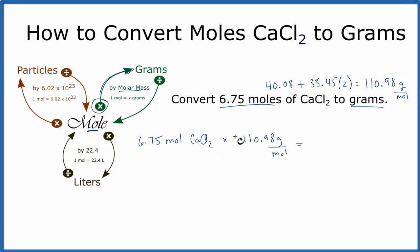When we multiply the top and divide by the bottom, the moles cancel out. That leaves us with grams, which is what we're looking for: 749.12 grams of CaCl2.